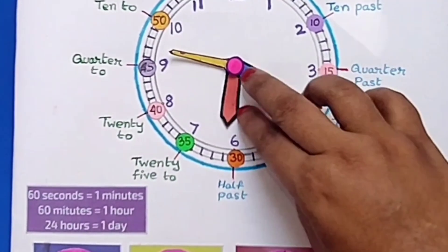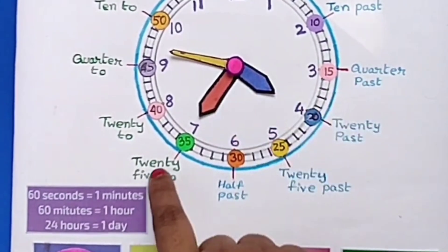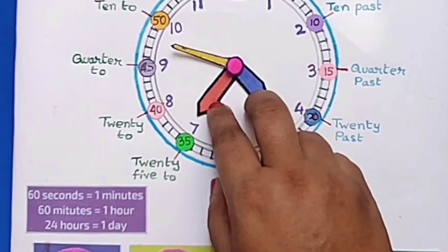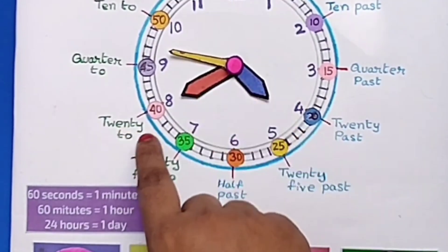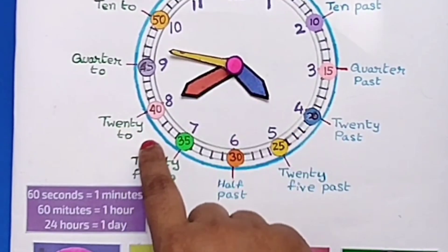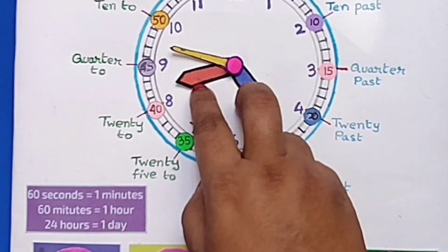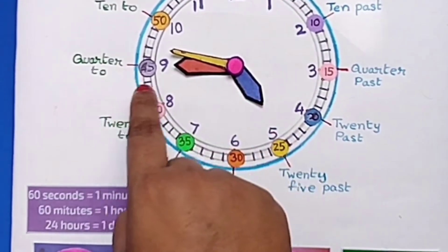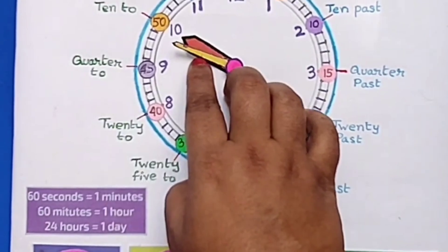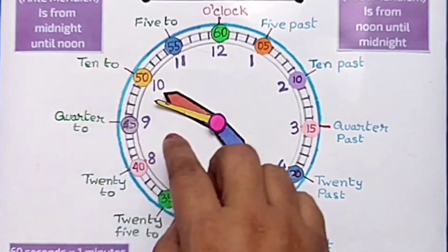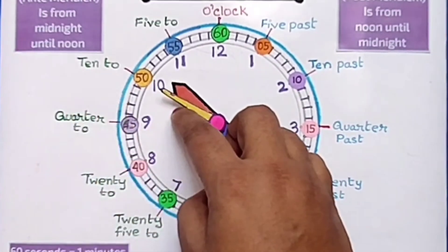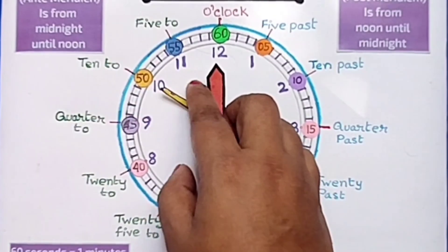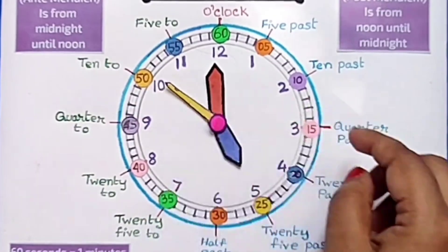After 6, it will change. Now it is 25 to 5, then 20 to 5, quarter to 5, 10 to 5, 5 to 5, and finally it is 5 o'clock.